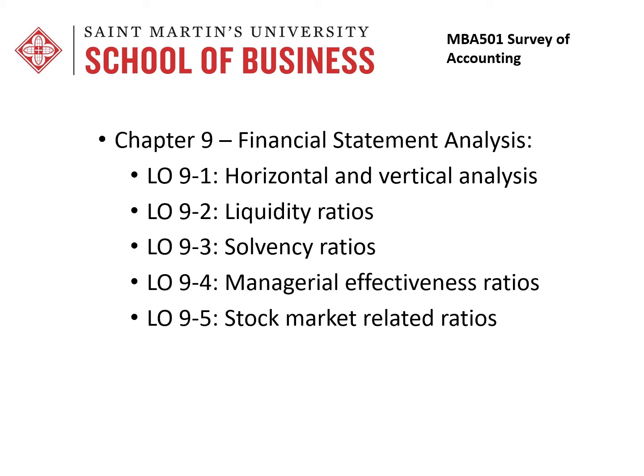Horizontal and vertical analysis are ways of looking at financial statements. We'll talk about liquidity ratios, which determine how a company is able to pay their bills as they come due. Solvency is more of a long-term viability aspect. And then we'll talk about managerial effectiveness ratios and stock market related ratios. I'm not going to cover every single ratio in your book — just the ones I think are most relevant and most likely to use in the future.